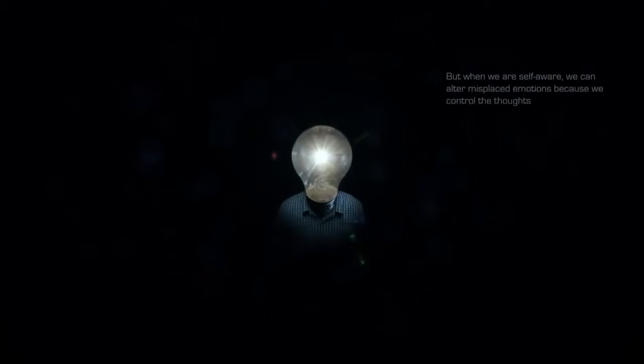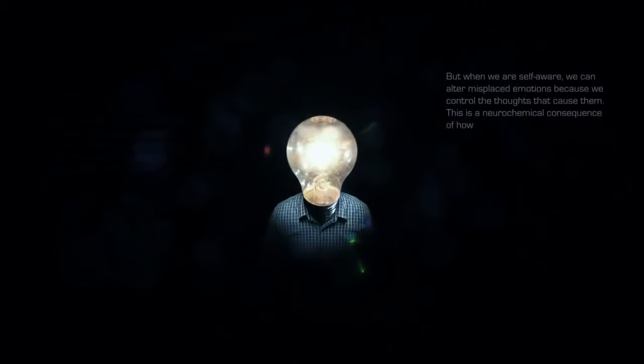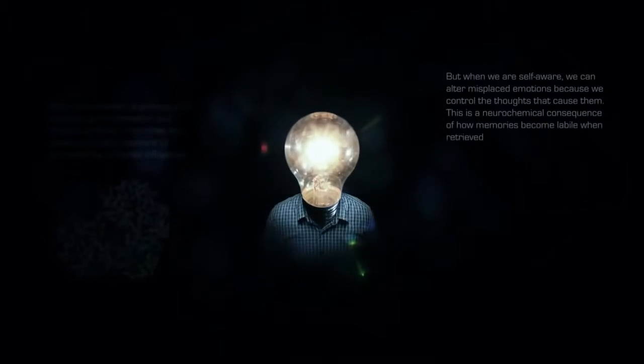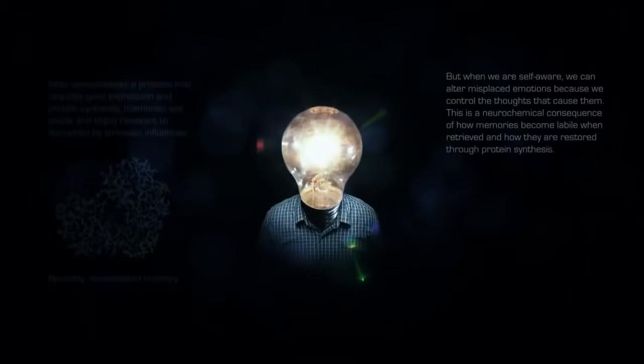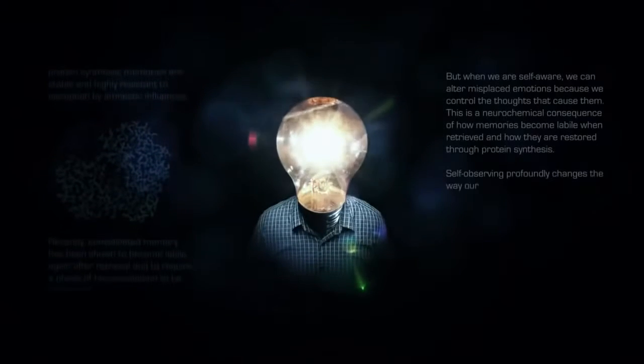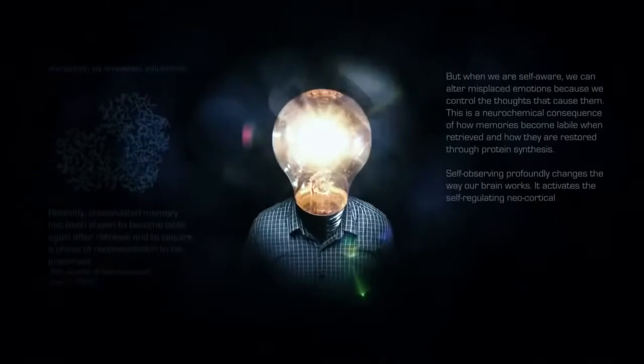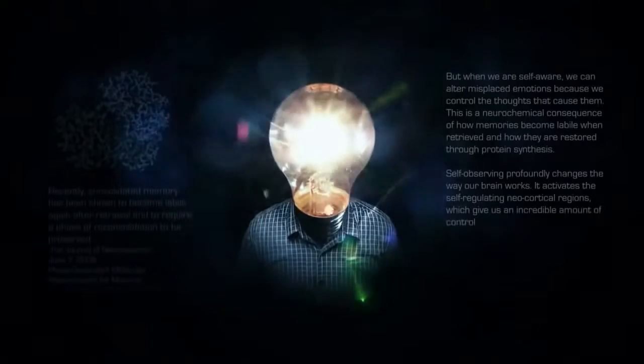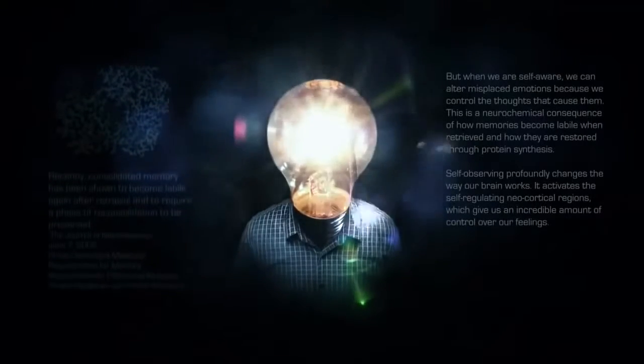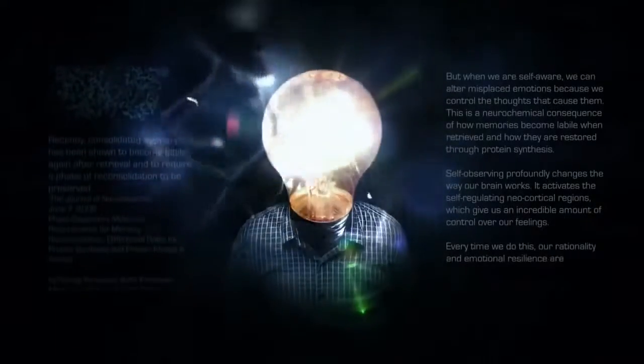But when we are self-aware, we can alter misplaced emotions because we control the thoughts that cause them. This is a neurochemical consequence of how memories become labeled when retrieved, and how they are restored through protein synthesis. Self-observing profoundly changes the way our brain works. It activates the self-regulating neocortical regions which give us an incredible amount of control over our feelings. Every time we do this, our rationality and emotional resilience are strengthened.